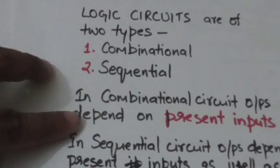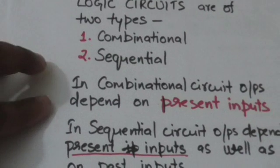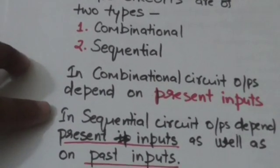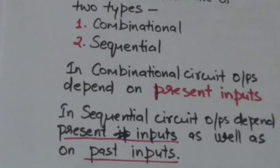Sequential circuits consist of logic gates and employ a memory element. In sequential circuits, output depends on both present inputs and the state of the memory element. The state of the memory element depends on previous values of the input, so output depends on present inputs as well as past inputs.